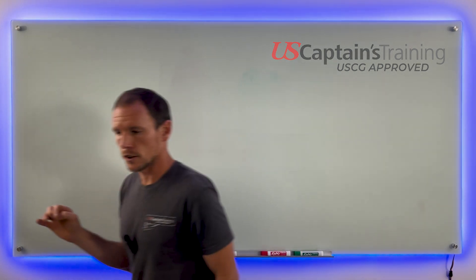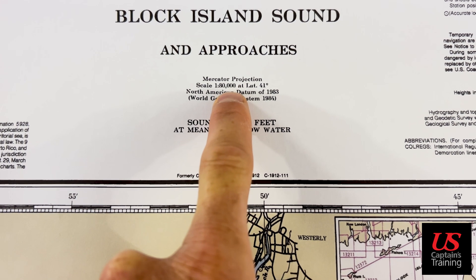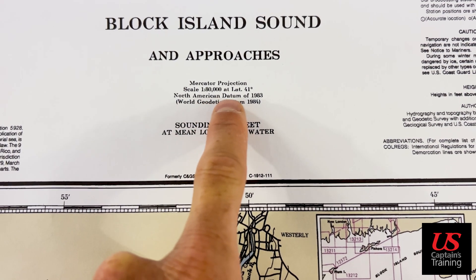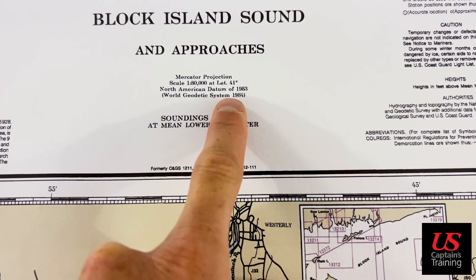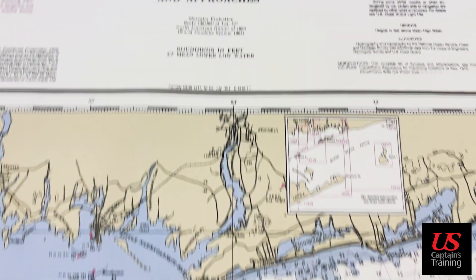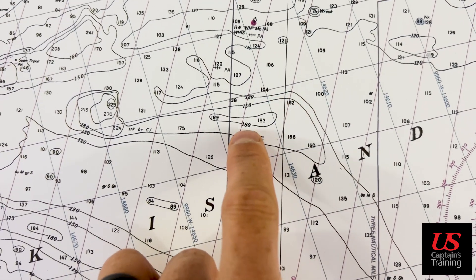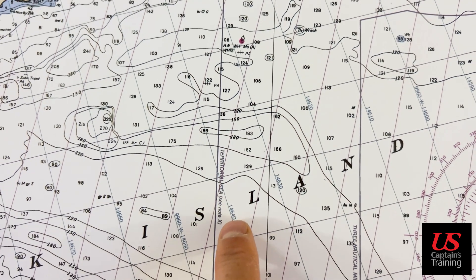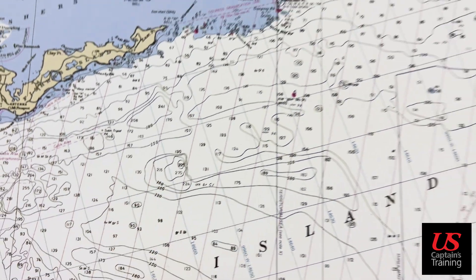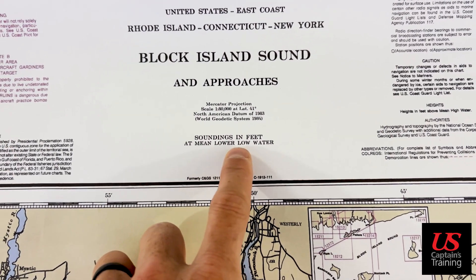Soundings in feet at mean lower low water — all the soundings on this chart and these contour lines, going up or down in increments of 30, are all based on that datum. You can see the contour lines at 120, 150, 180 — all based on mean lower low water.